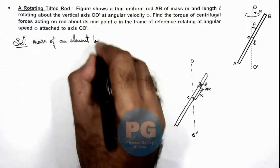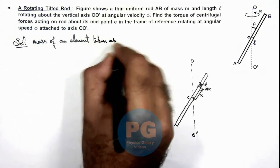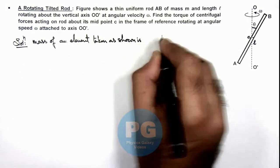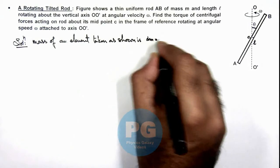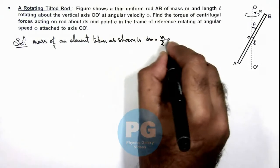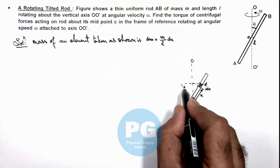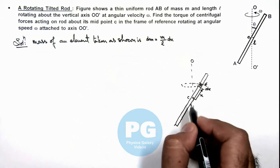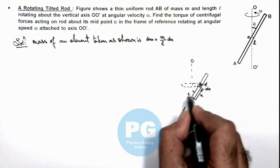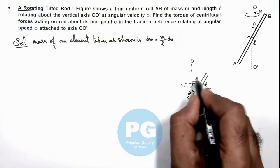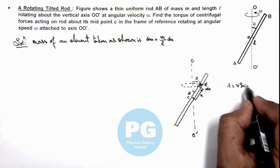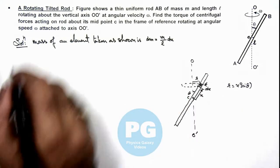This we can write as m by l multiplied by dx. And this element is considered to be revolving in a circle of radius, if this angle is theta, then its radius r can be written as x sine theta.